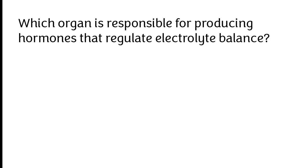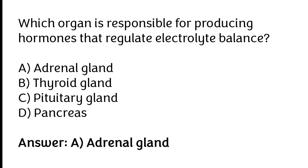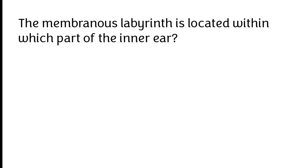Which organ is responsible for producing hormones that regulate electrolyte balance? Adrenal gland, thyroid gland, pituitary gland, pancreas. The correct answer is option A — the adrenal gland is responsible for producing hormones that regulate electrolyte balance.